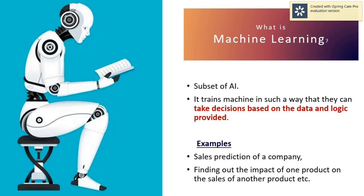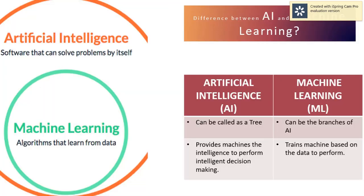Now let's discuss the difference between AI and machine learning. AI can be called a tree — if you imagine a big tree, there will be sub-branches inside it. Machine learning is a sub-branch of AI.